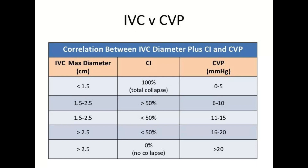A few studies have shown correlation between IVC and CVP. If IVC maximum diameter is less than 1.5 cm and collapsibility index is 100%, it correlates with a CVP of 0 to 5 mmHg. If diameter is more than 2.5 cm with no collapsibility, it correlates with a CVP of more than 20 mmHg.